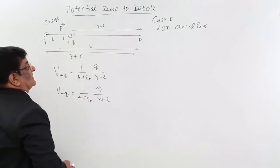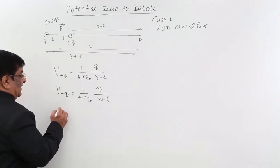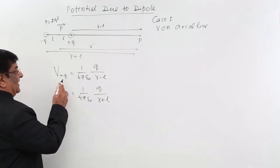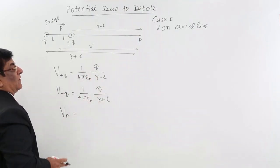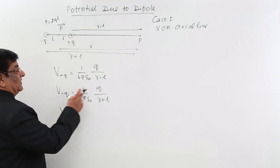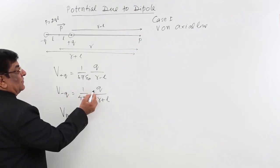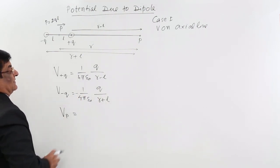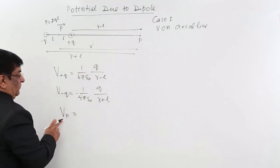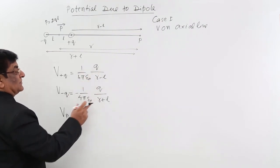Now, potential is a scalar quantity, so we do not have to worry about direction. The total net potential at P will be the algebraic sum of the two potentials. The potential due to the negative charge is negative, so we include the minus sign, and adding the two gives the total potential.